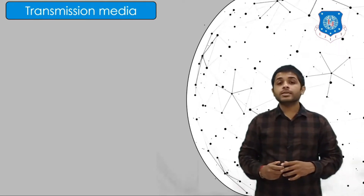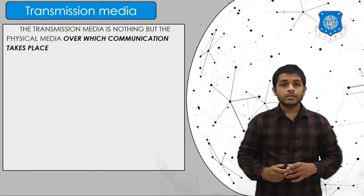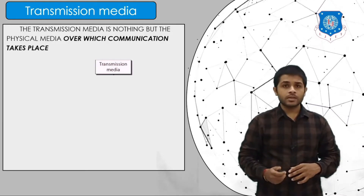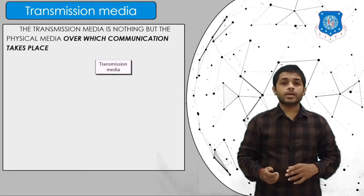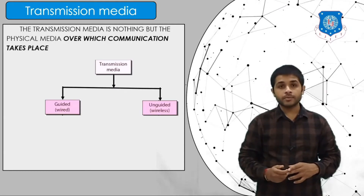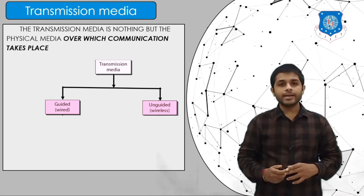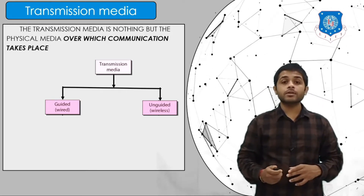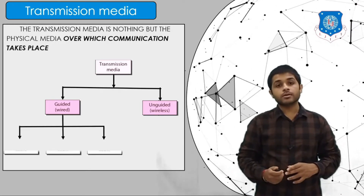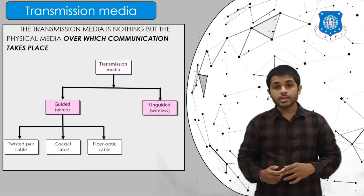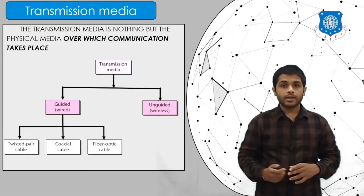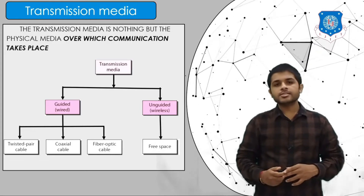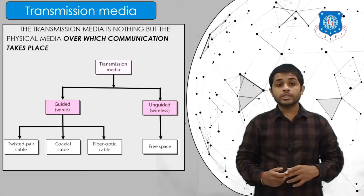Transmission media is the physical medium over which communication takes place. There are two main types: guided and unguided. Guided means wired, and unguided means wireless. Guided media can be further categorized into three types: twisted pair cable, coaxial cable, and fiber optic cable. An example of unguided communication is free space.